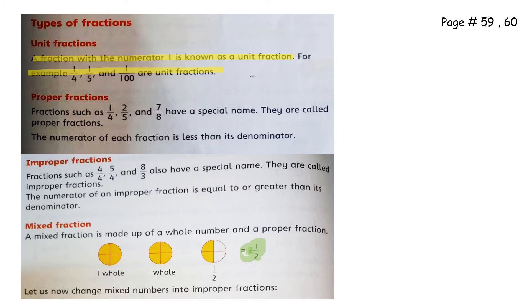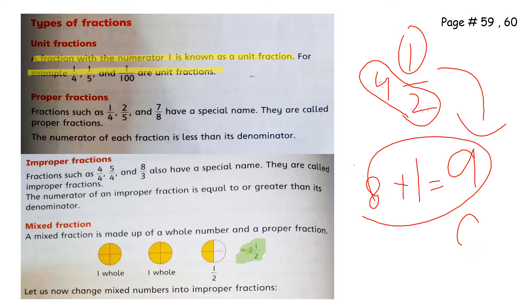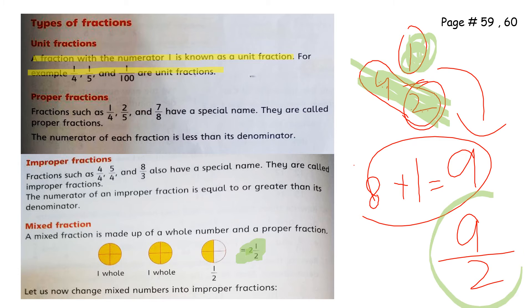To convert a mixed fraction into an improper fraction, we multiply the whole number by the denominator — for example, 4 twos are 8 — and then add the numerator to get 9. So the result is 9 by 2. The denominator stays the same. This is the standard method to convert a mixed fraction into an improper fraction.